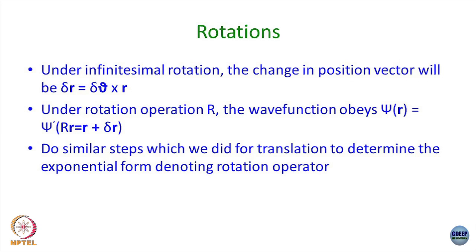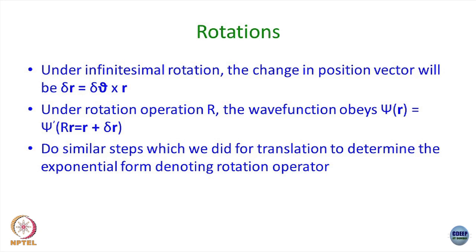Under infinitesimal rotation, the change in the position vector is given by a rotation by an angle theta cross r, and you try to find how the wave function obeys this. After similar steps, you can identify the generator for rotations, and then by doing n number of steps of infinitesimal transformation, you get the exponential form.